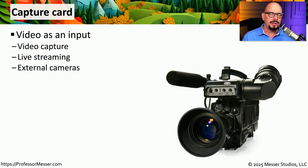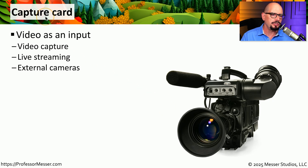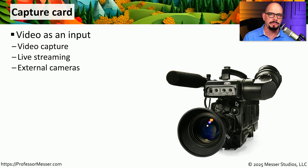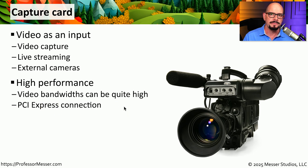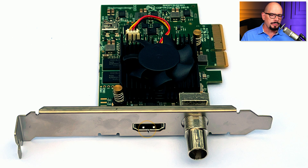A discrete graphics card is usually designed for outputting video, but often you might want to have video input into your computer, and you can do that using a capture card. This might come from a separate video source such as a camera, or you may be connecting separate computers as video input into your computer. When you're dealing with video, there is a lot of data being transferred, so most of these capture cards will have very high throughputs, and they're usually connected directly to the PCI Express bus. Here's an example of a video capture card — this one supports video input over HDMI and SDI, which is a serialized form of video input, and it connects directly to the PCI Express bus.